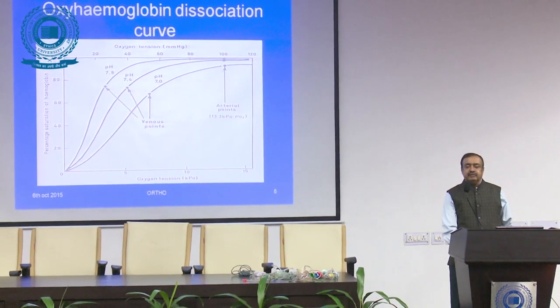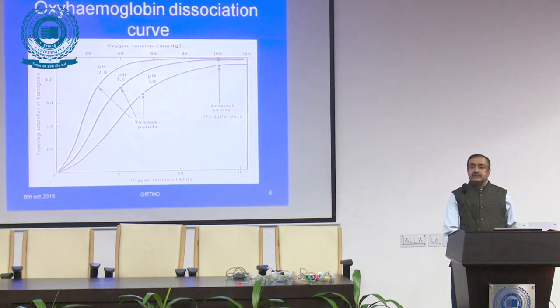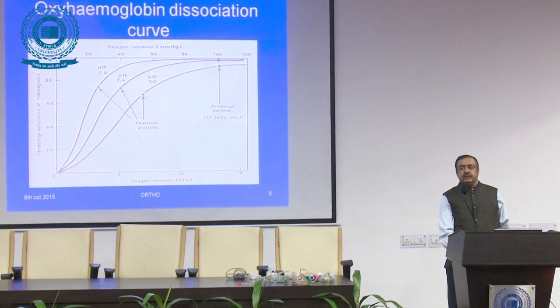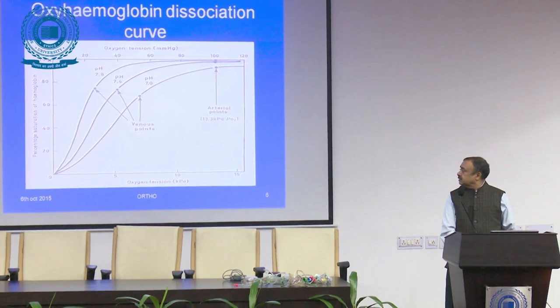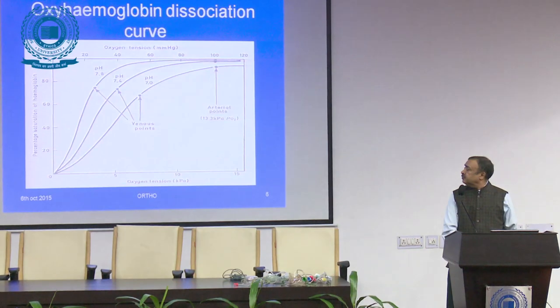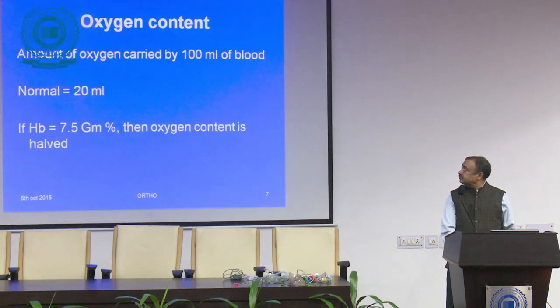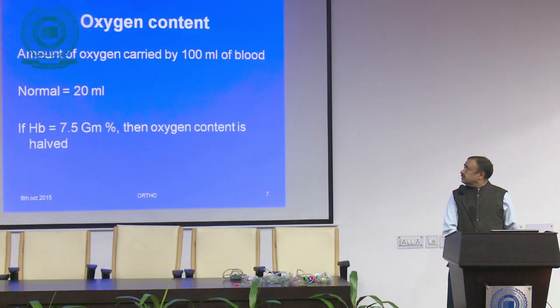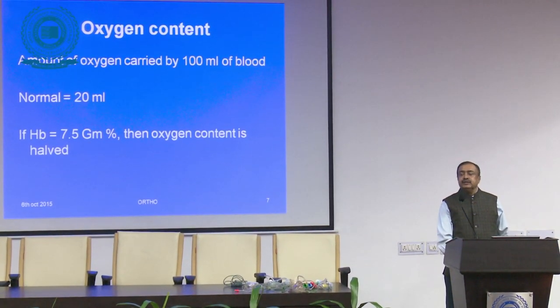There are three definitions we must be familiar with: anoxia, hypoxia, and hypoxemia. The oxygen dissociation curve — seen in textbooks and nursing books — shows how oxygen molecules are carried by hemoglobin. One gram of hemoglobin carries about 1.34 ml of oxygen. Some oxygen is also dissolved in plasma, and 100 ml of blood normally contains about 20 ml of oxygen.